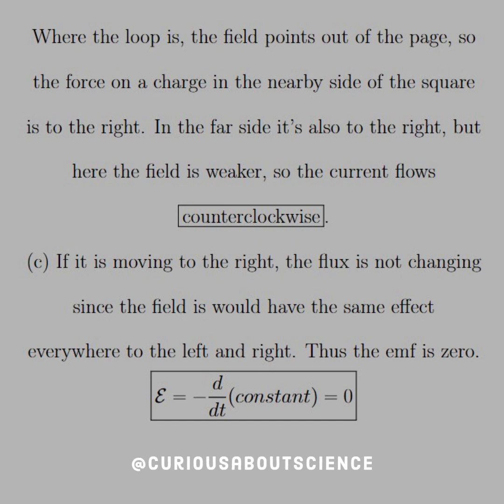Alright. So, let's see how this field is affecting it. So, where the loop is, the field points out of the page. Use the right-hand rule. If the current's flowing to the right, put your thumb in a direction and curl your fingers over. So, you see that the field is pointing out of the page for everywhere in the loop. Clearly, since it is radially dependent,